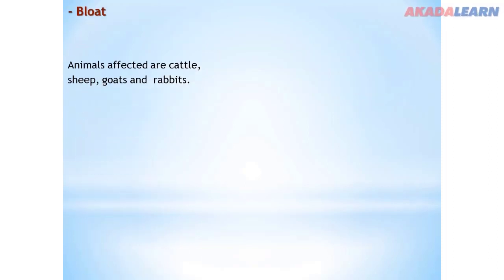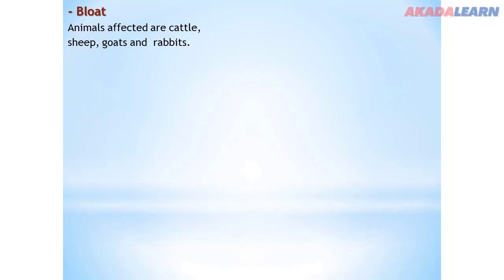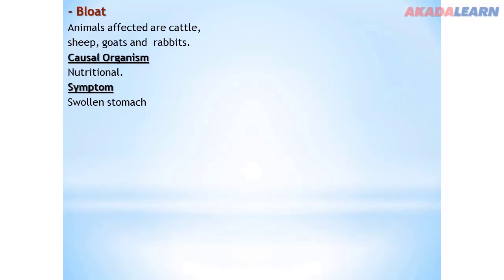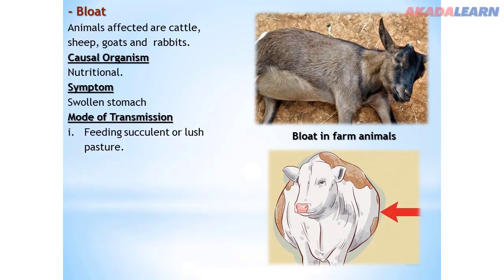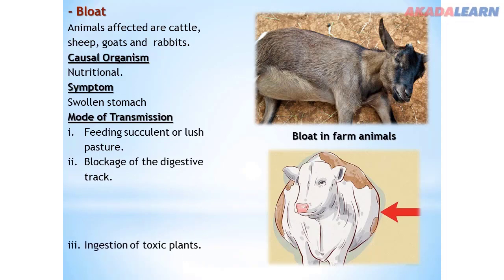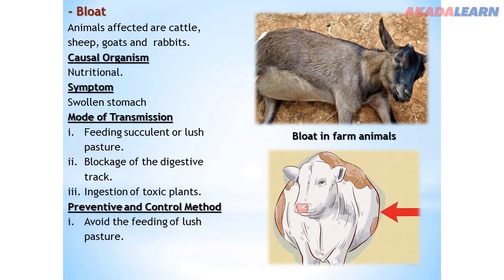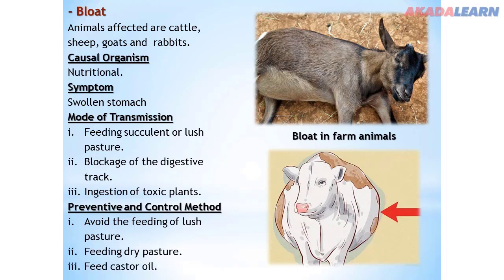Number one, we have bloat. Animals affected are cattle, sheep, goats, and rabbits. Causal factor: nutritional. Symptoms: swollen stomach. Mode of transmission: feeding on lush pasture, blockage of the digestive tract, and ingestion of toxic plants. Prevention method: avoid feeding lush pasture, feed dry pasture, and feed the animal castor oil when affected — that will help the animal recover.